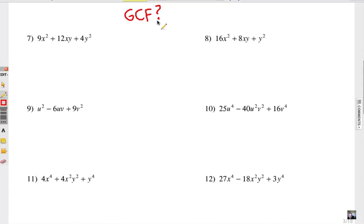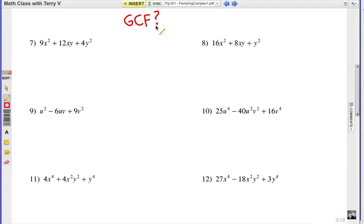Number seven through 12 are all perfect square trinomials, but remember, look for a GCF first. Click on pause, you try them first.